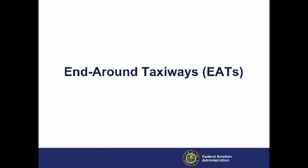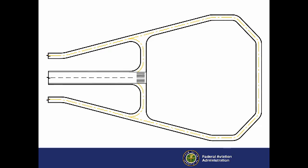End Around Taxiways, or EATs, are taxiways constructed around the end of the runway, like the one shown here. EATs can increase airport capacity by allowing airplanes to cross the approach to a runway without specific clearance from air traffic control.